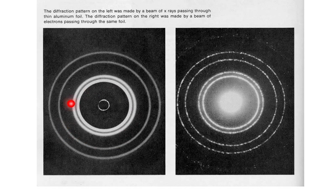Now on the left here, this is the diffraction pattern that was made by a beam of electrons passing through aluminum foil. On the right here, this is produced by electrons passing through the same foil.